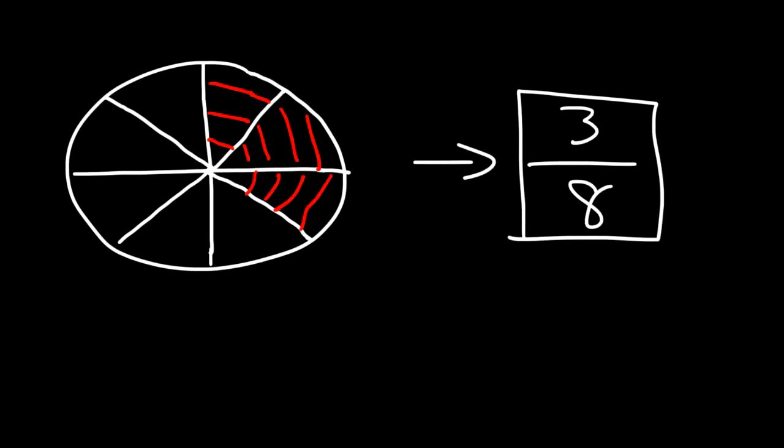Hopefully these visual illustrations help you understand the concept of a fraction, which is basically a portion out of a whole. Now here's another example: we have a rectangle and it's broken up into seven congruent parts — granted my drawing is not perfect, but we'll make it work.